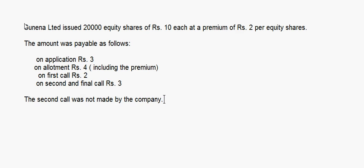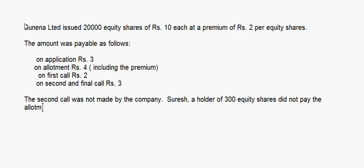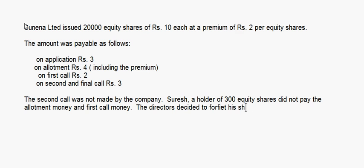Suresh, holder of 300 equity shares, did not pay the allotment money and first call money. The directors decided to forfeit his shares. Pass the necessary journal entry for forfeiture. We have to pass the journal entry only for forfeiture here - not the whole thing. So the allotment money is rupees 4.